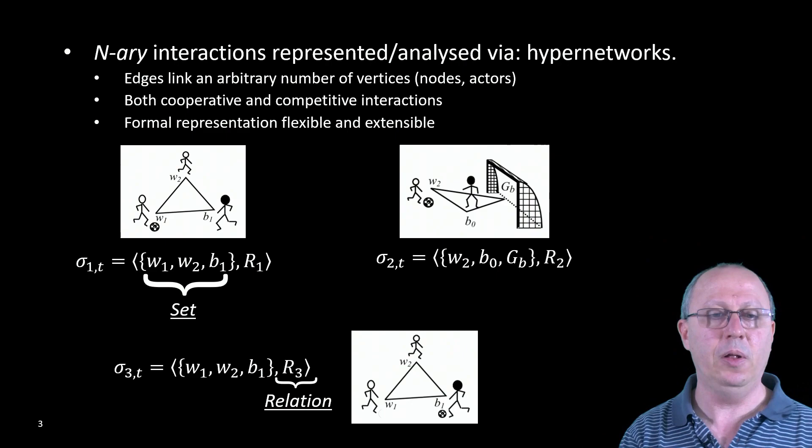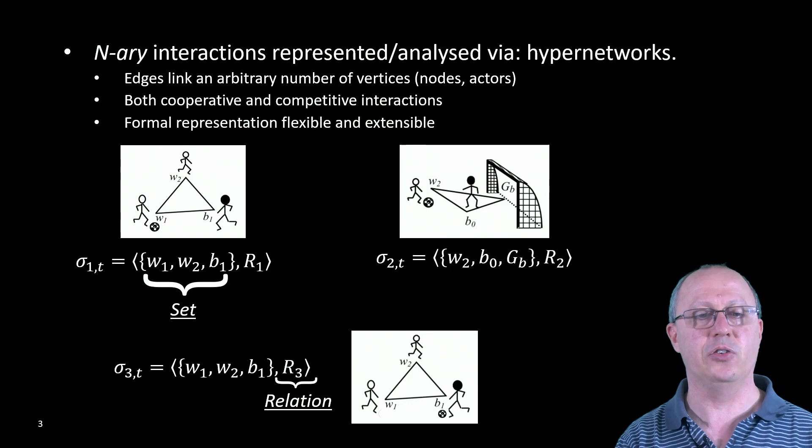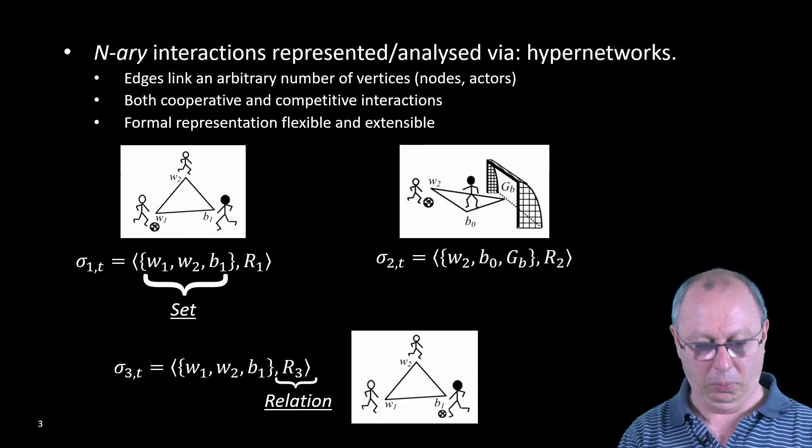In the running example we have three different hypersimplexes: sigma 1, sigma 2 and sigma 3, with sigma 1 and sigma 2 having the same set of elements—players white 1 and white 2 and black 1—and sigma 3 with a different composition, namely two players from each team and a goal.